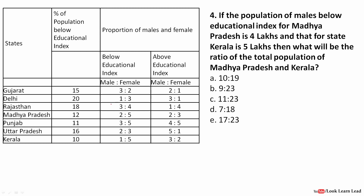Next: the male population below educational index for Madhya Pradesh is 4 lakhs, and MP's below index is 12 percent. Below is divided 2:5, so males are 2/7. We write 2/7 × 12% × x = 4, which gives x = 700/6 for Madhya Pradesh's total population.